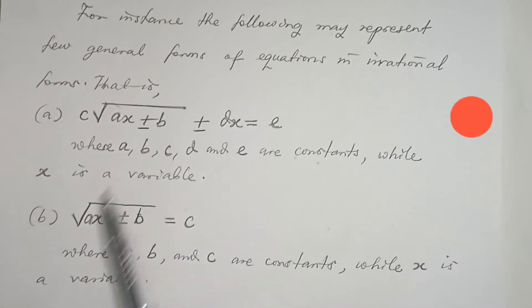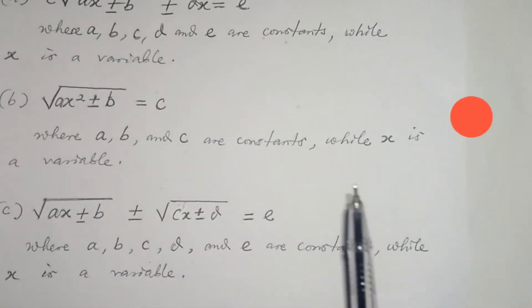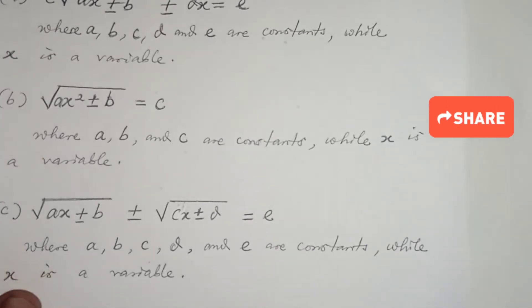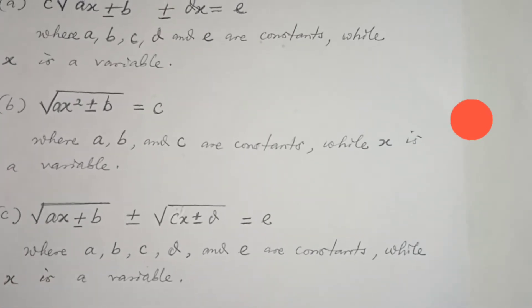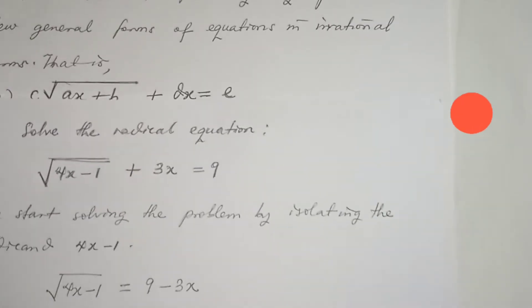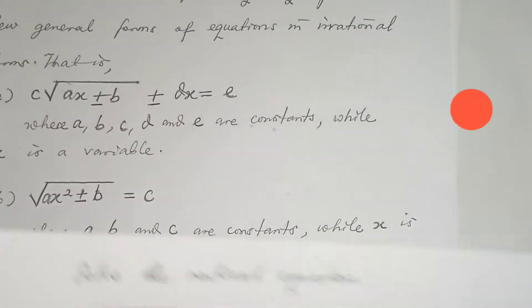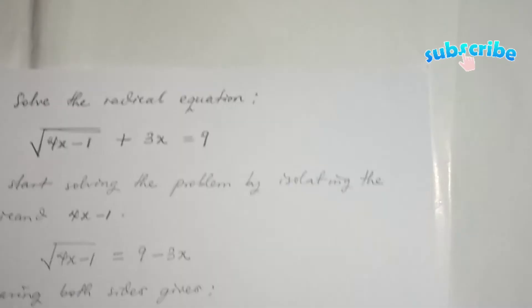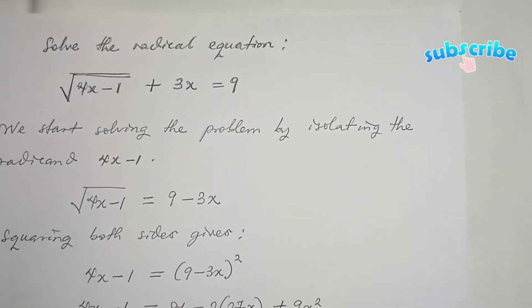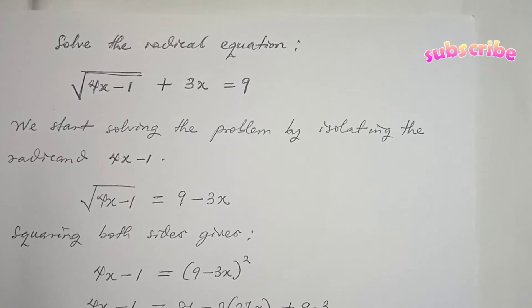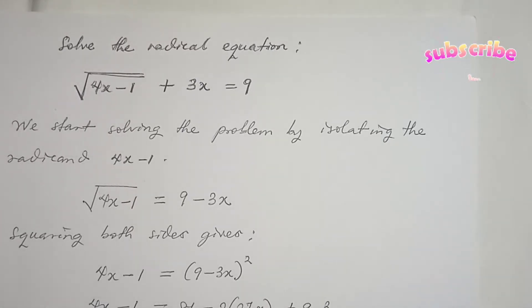This first type — we are going to solve a problem on it. The second type — I'm going to show you how to solve problems on it, and the third type as well. Now the first thing I want to state is that in all the types I have mentioned, solving equations in irrational form requires one thing: you must start solving the problem by isolating the radical.